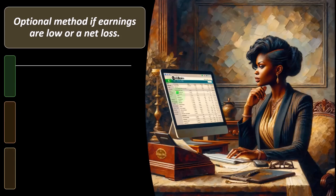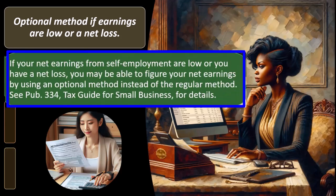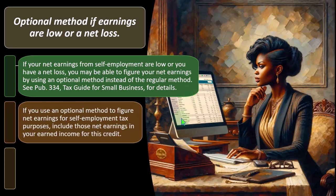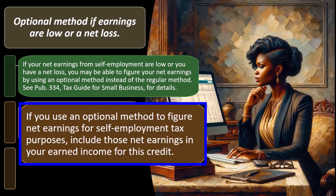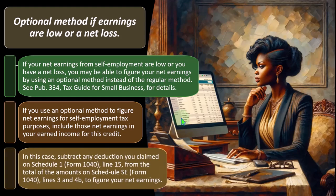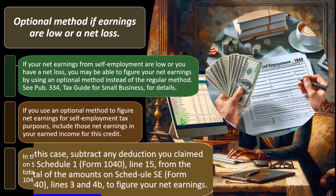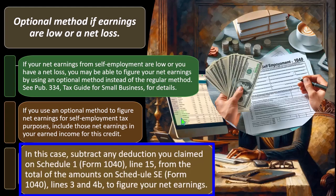Optional method: if your net earnings from self-employment are low or you have a net loss, you may be able to figure your net earnings using an optional method instead of the regular method. See Publication 334, Tax Guide for Small Business, for details. If you use the optional method, subtract any deduction you claimed on Schedule 1, Form 1040, line 15, from the total of Schedule SE, Form 1040, lines 3 and 4B to figure your net earnings.